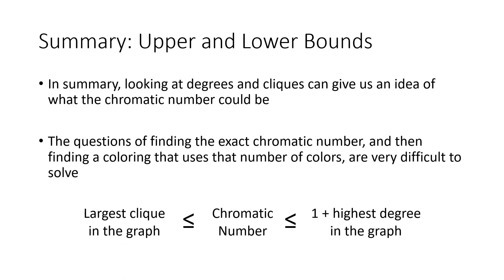So in summary, when we're looking at degrees and cliques, that can give us an idea of what the chromatic number could be. And the question of finding the exact chromatic number and then finding a coloring that uses that number of colors — that's a whole other problem. Even if we somehow figured out what the chromatic number is, we actually have to find a way to color the graph using that number of colors. These are pretty difficult problems, and a lot of actual mathematical research is happening today looking at graph coloring problems. So this is a really open field of study for mathematicians. Hopefully you've gotten a good overview of the coloring problem for graphs.